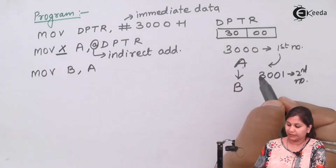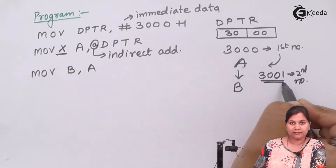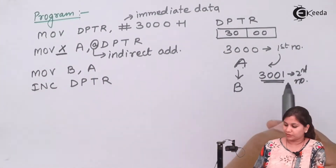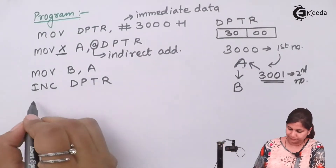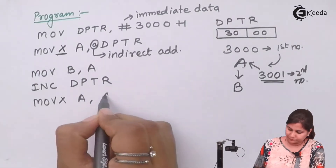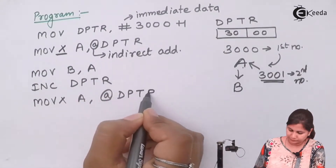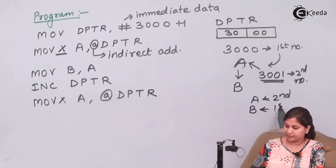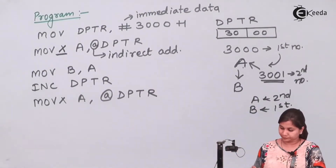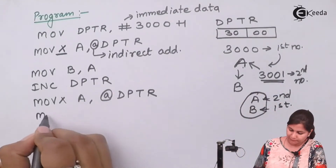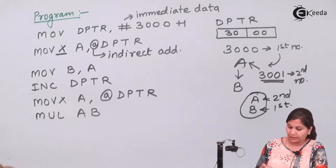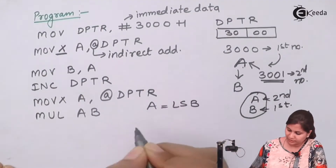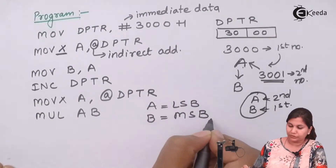Next, we increment DPTR so it now points to 3001H using INC DPTR. Then we execute MOVX A, @DPTR again to load the second number into the accumulator. Now register A has the second number and register B has the first number. We then execute MUL AB to perform the multiplication.